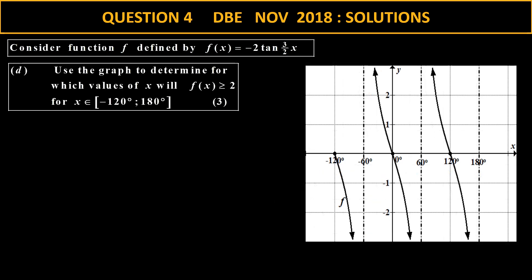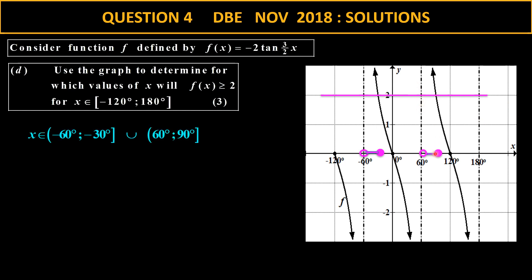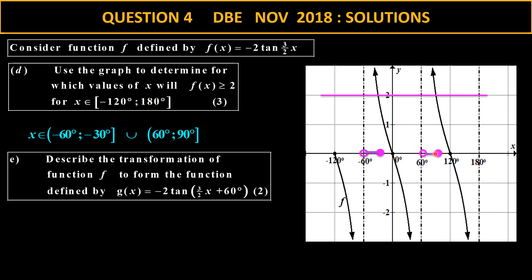Now let's look at where f(x) is greater than or equal to 2. There is the line y equals 2. The portion that is greater is between the asymptote and that point. It's between negative 60 and negative 30. And it is also greater between the asymptote at 60 and the point at 90 — so between 60 and 90, as indicated.